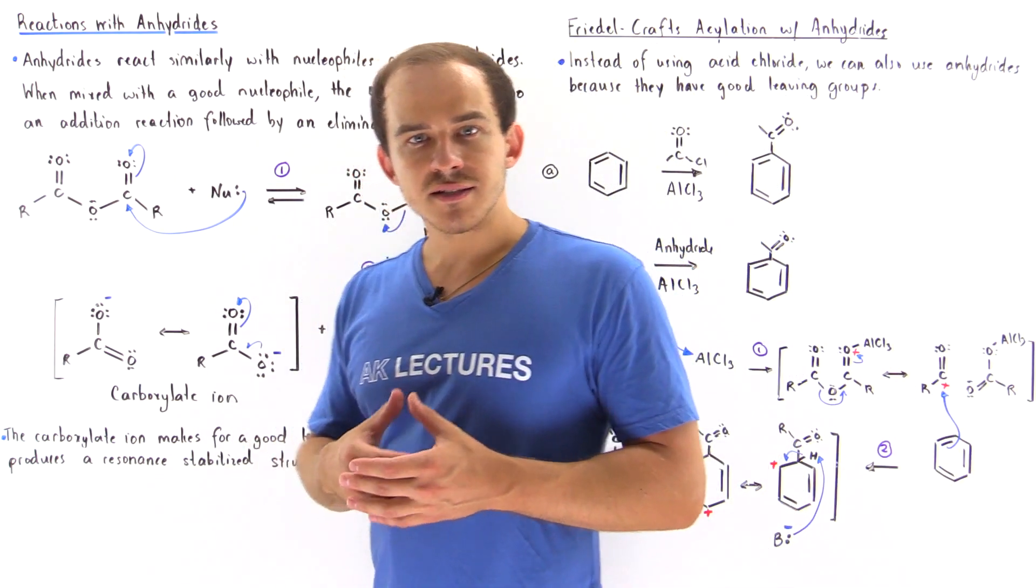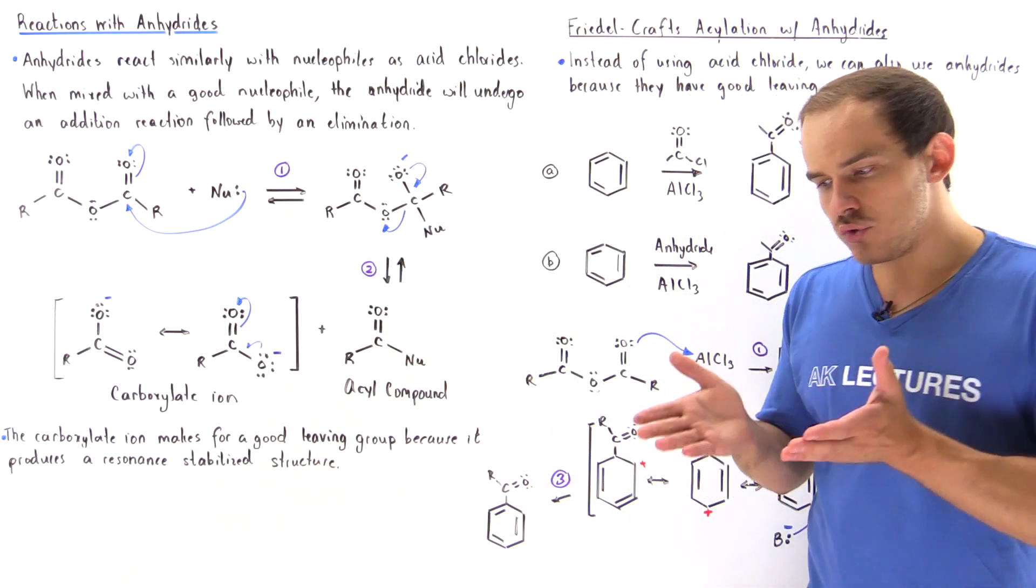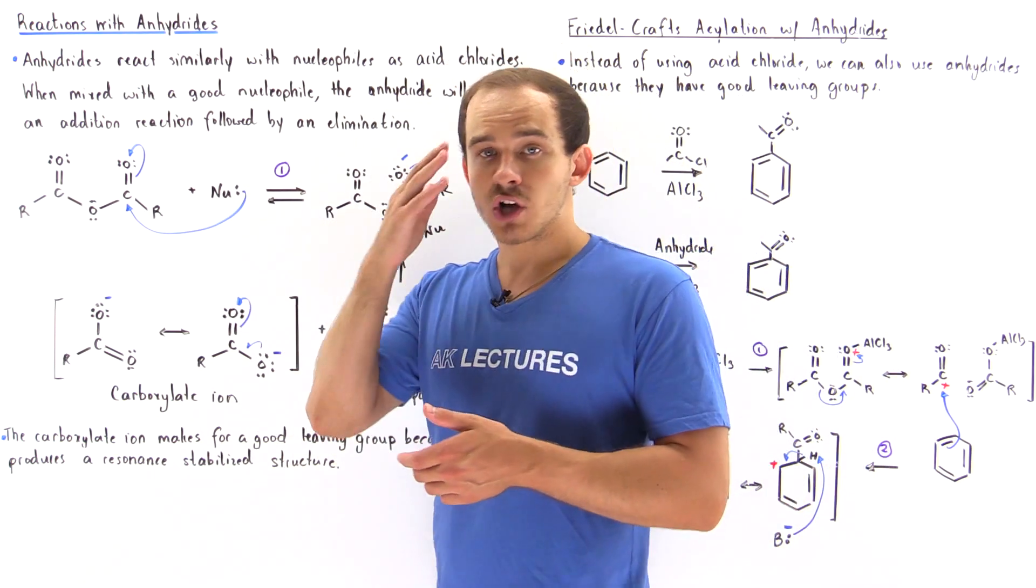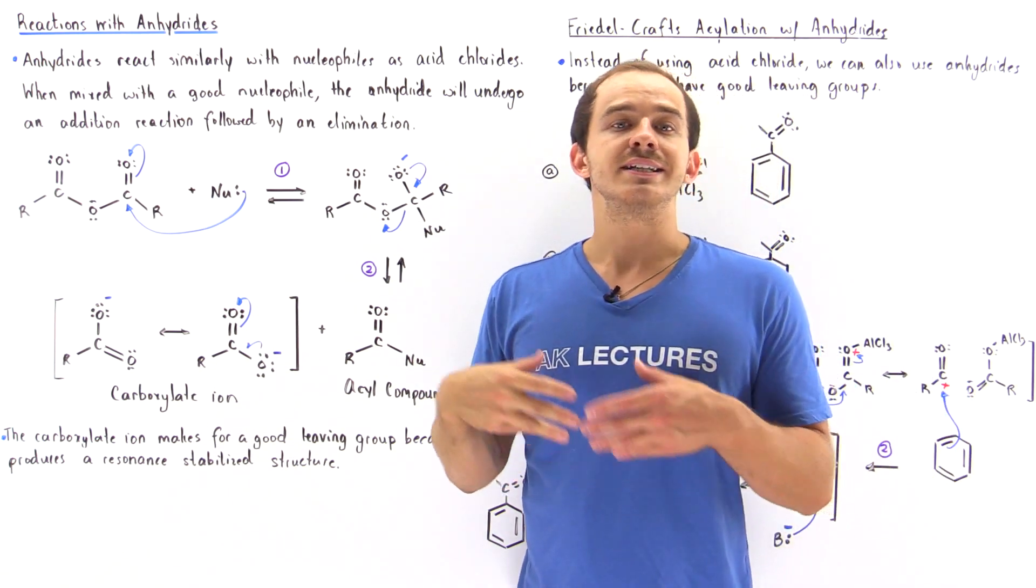Earlier we discussed that if we take an acid chloride and mix it with a nucleophile, the nucleophile will add to the carbon of the carbon-oxygen double bond and that step is known as the addition step.